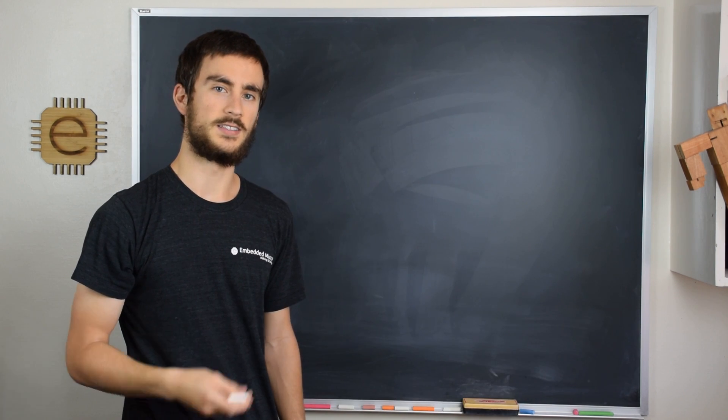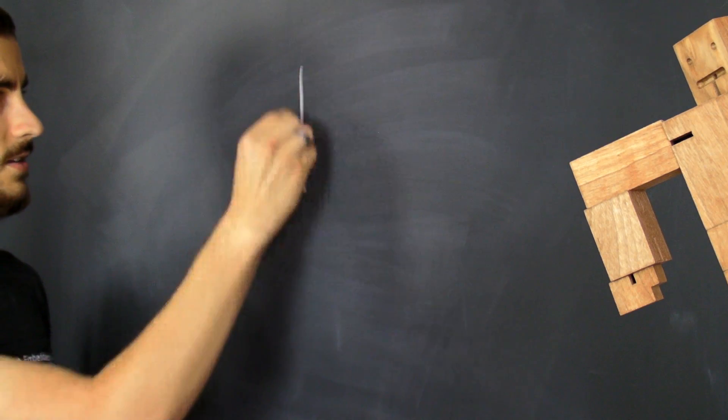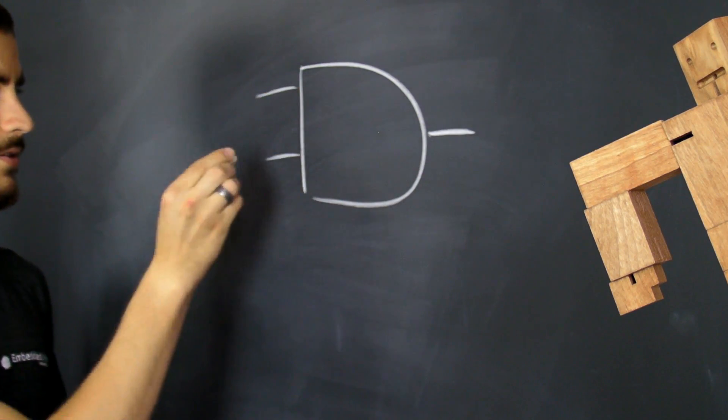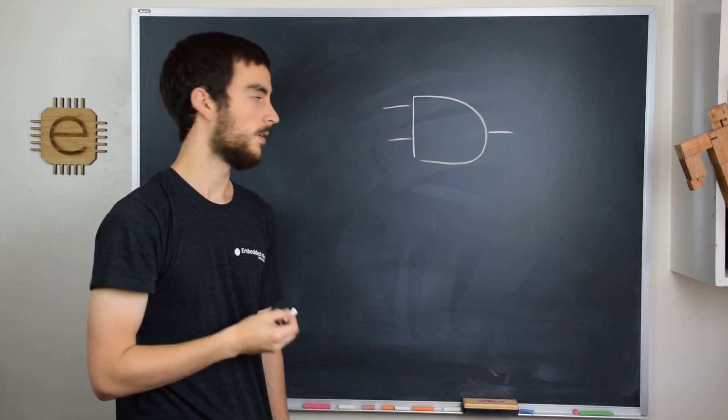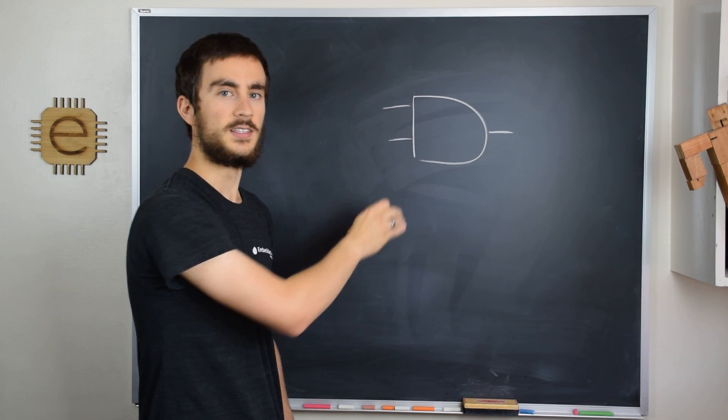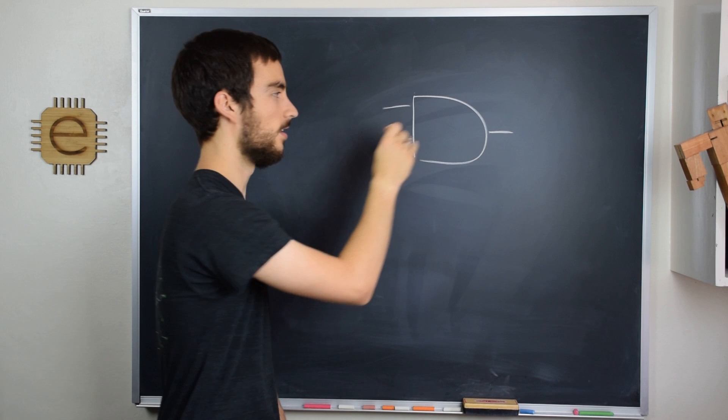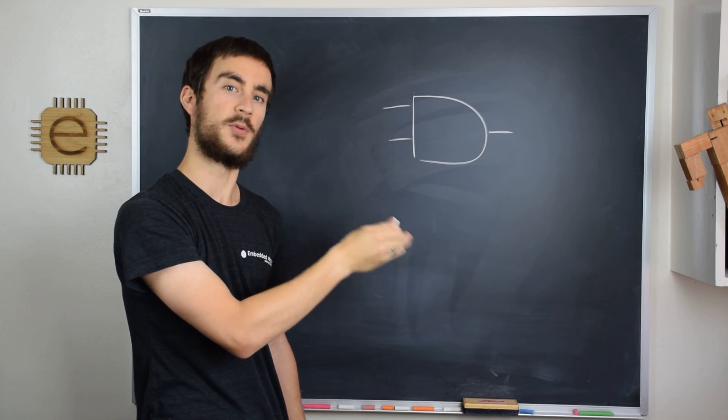The next gate we're going to look at is the AND gate. The AND gate symbol looks like this, where you have two inputs and one output. And what this gate does is when the first input and the second input are 1, then the output will be 1. Otherwise, the output is 0.